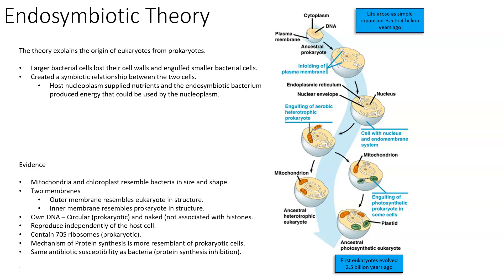What is the endosymbiotic theory? The endosymbiotic theory uses symbiosis as a means of explanation for how ancestral prokaryotes evolved to produce the first eukaryotic cells roughly 2.5 billion years ago. We're going to use the fact that organisms change over time and adaptations happen as a means of explanation for how we believe early prokaryotes became the first eukaryotic single-celled organisms.